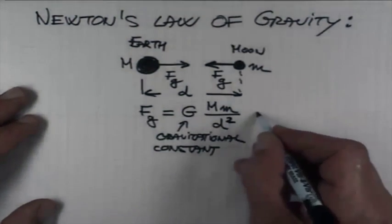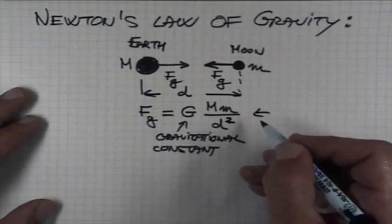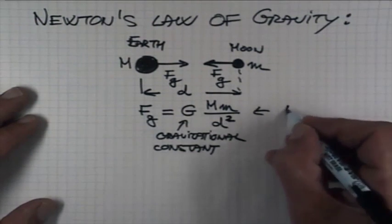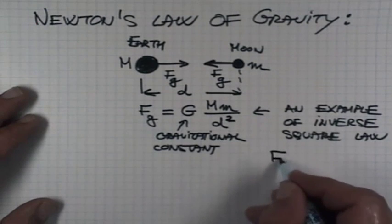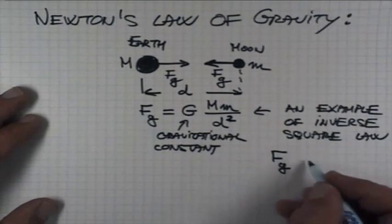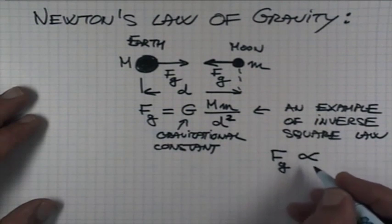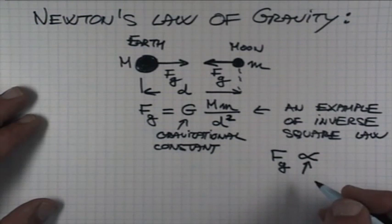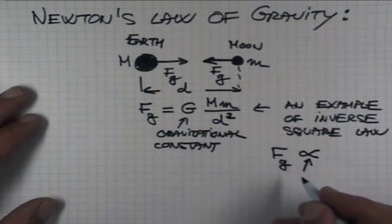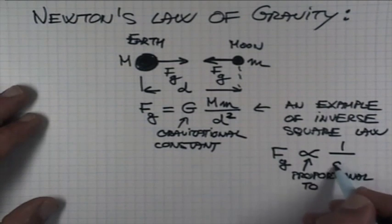It's an example, as I mentioned before, of an inverse square law. Basically, the force of gravity is proportional... The fact that something is proportional to is denoted with this horizontal incomplete symbol of 8, 1 over the distance squared.